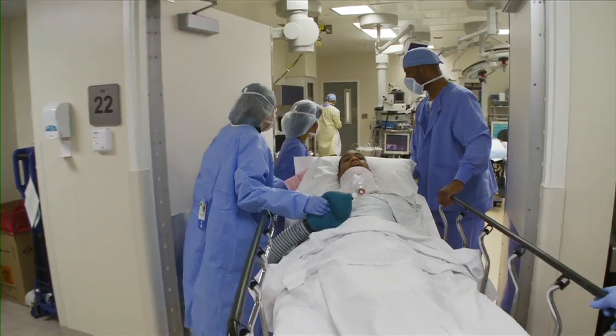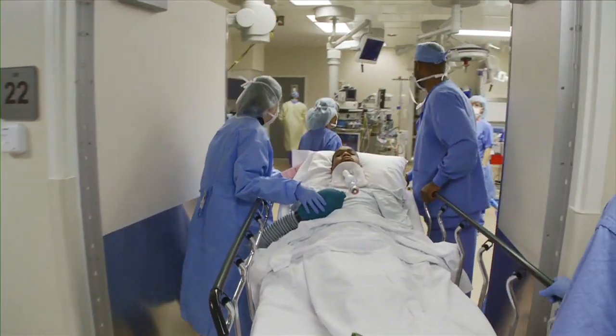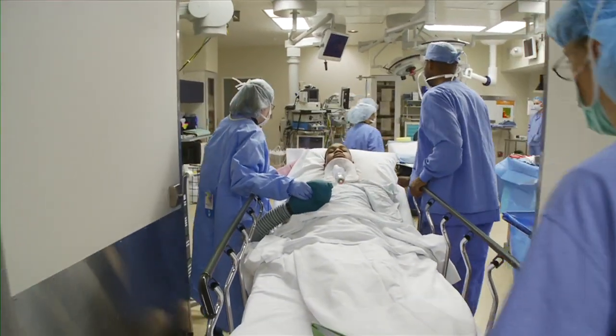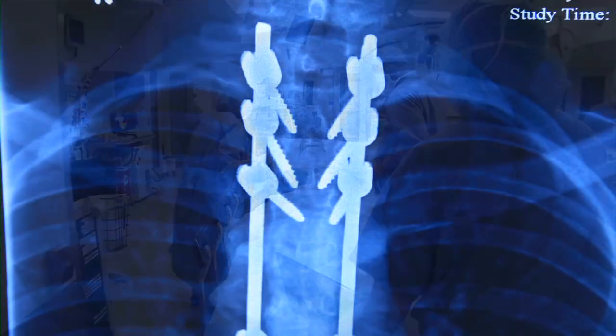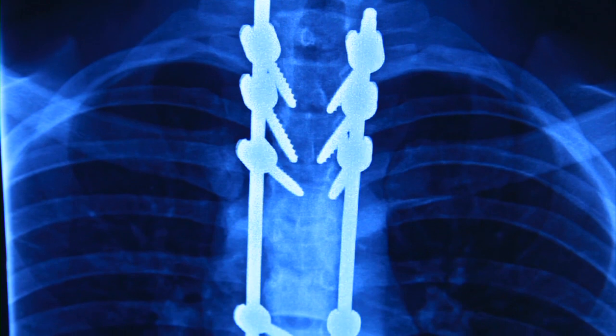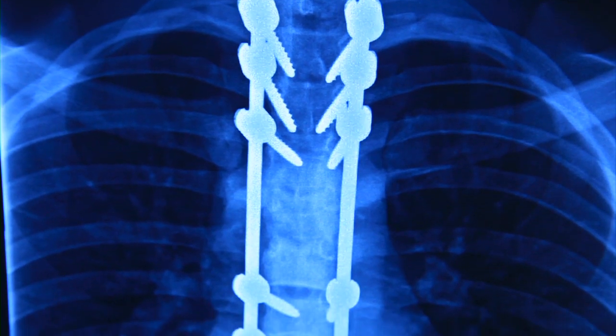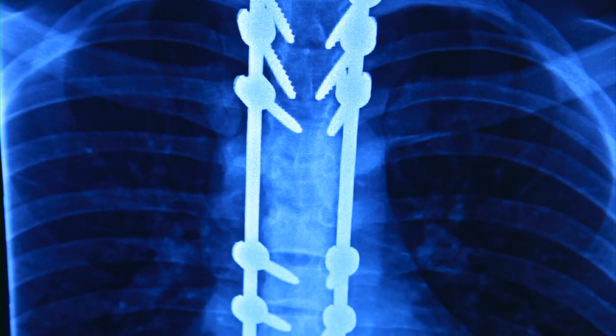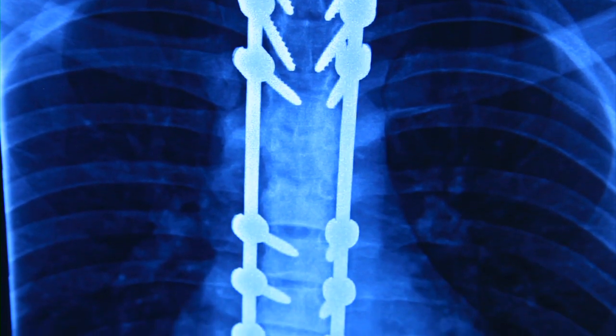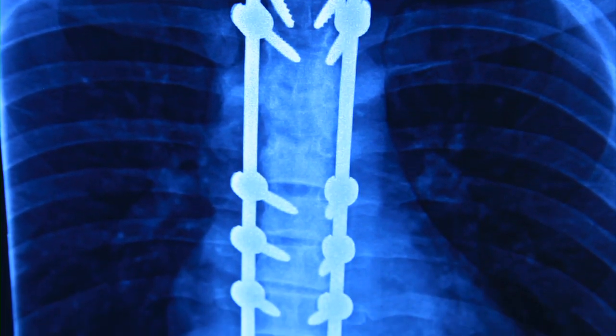After a spinal cord injury and initial tests, there is much work to be done to minimize and prevent progression of the injury, including stabilization of the patient's medical status, reduction and restoration of spinal alignment, decompression of nerves, and stabilization of the fractures.